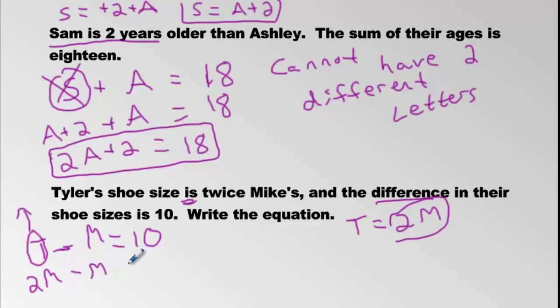And then I'm going to put my minus and M and equals to 10. But now I have two M's minus M. That's a good thing because it's only one letter. It's an M and an M. Here I had a T and an M. That's no good. This is M and an M. That's good. M and M.